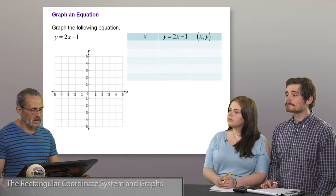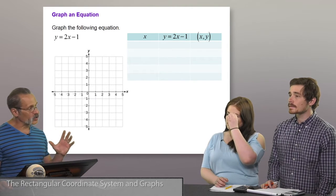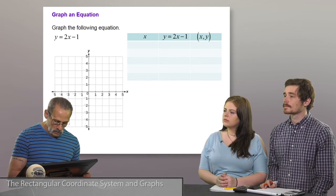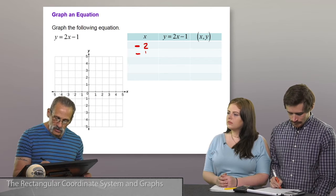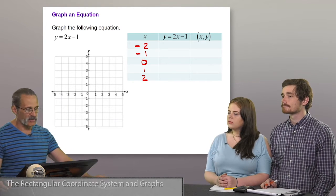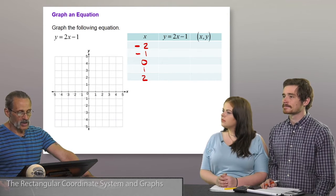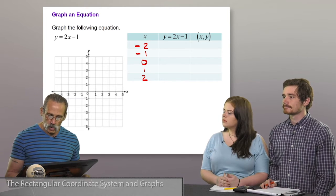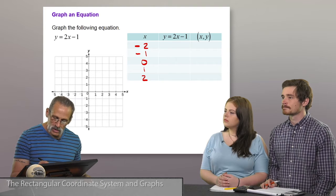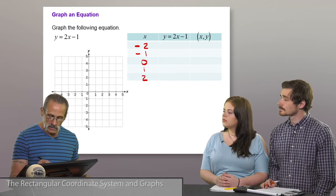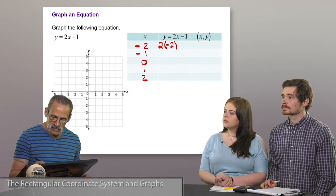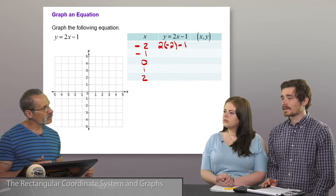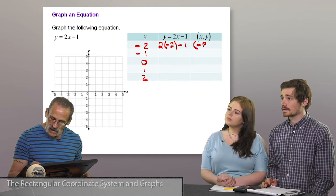To graph an equation, we're going to plot points. I'll choose 5 input values of x and generate the y-coordinates, then plot the ordered pairs. We know y = 2x − 1. Substituting x = −2: we have 2 times negative 2 minus 1, which gives a y-coordinate of negative 5. So the ordered pair is (−2, −5). For x = −1: 2 times negative 1 minus 1 gives us negative 3.